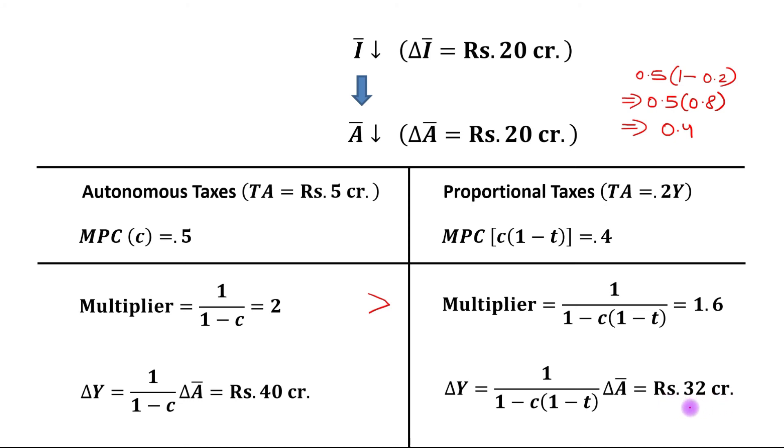The change in income in case of proportional taxes is Rs. 32 crore. The conclusion is that the change in income in case of proportional taxes is less as compared to the change in income of autonomous taxes. So proportional taxes act as an automatic stabilizer which reduces the impact of change in autonomous spending on change in output.